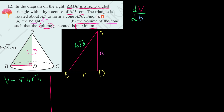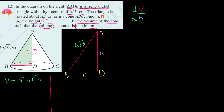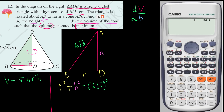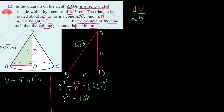Pythagoras' theorem tells us that a² + b² = c². So r² + h² must be equivalent to the square of the hypotenuse. Since we are looking for r², we get r² = 108 − h², because (6√3)² = 108. So now we have r in terms of h.